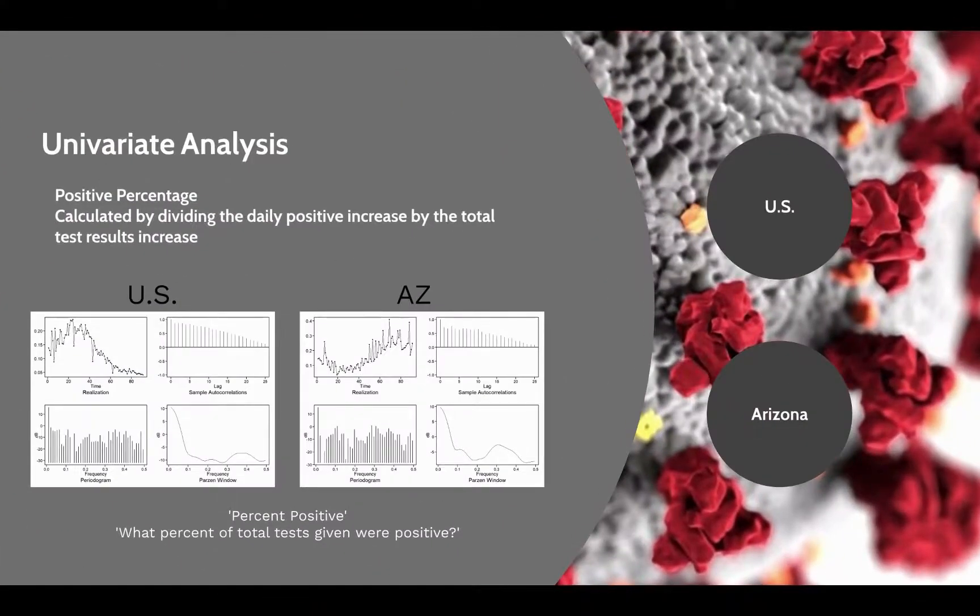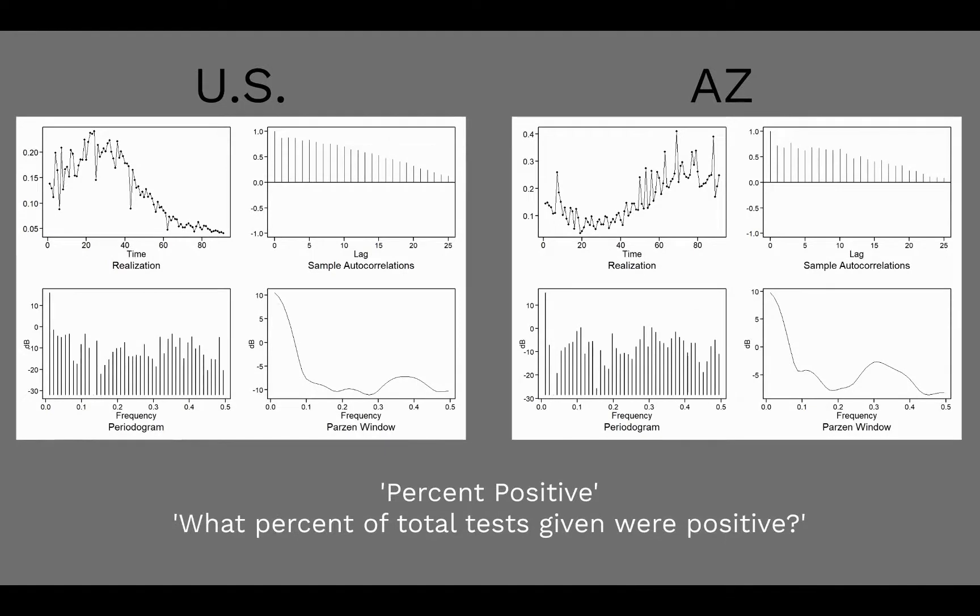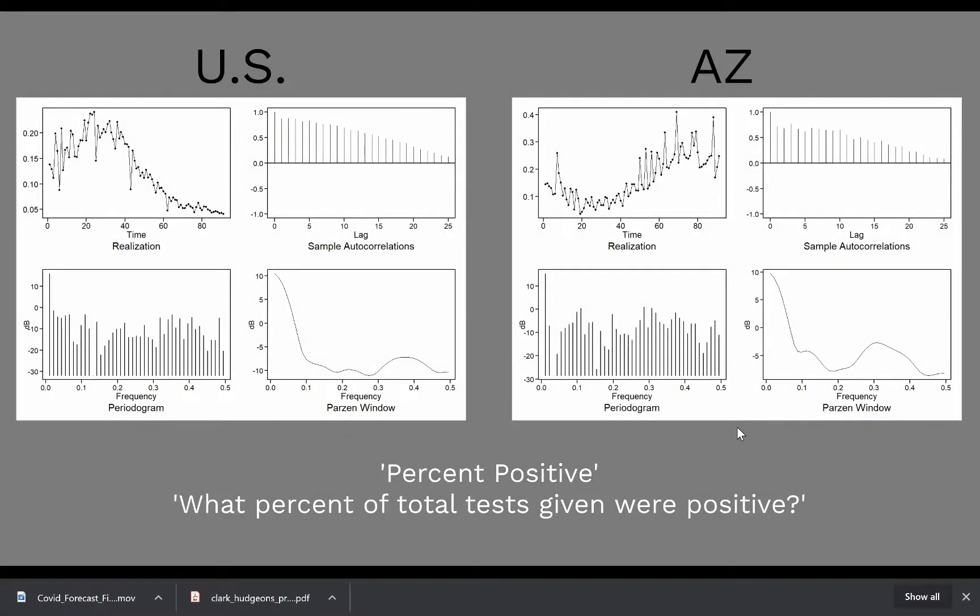So next we'll do a univariate analysis for forecasting positive percentage nationwide as well as Arizona statewide. Here you can see the two realizations next to one another. You can see Arizona is a little bit later in spiking as compared to the US. And we also see the wandering behavior captured by the dampening autocorrelations and they both have similar spectral densities.